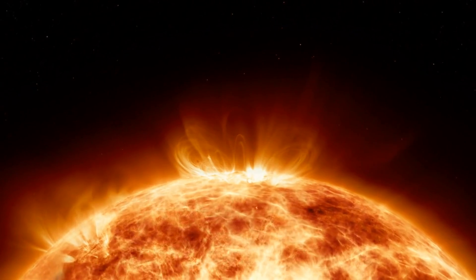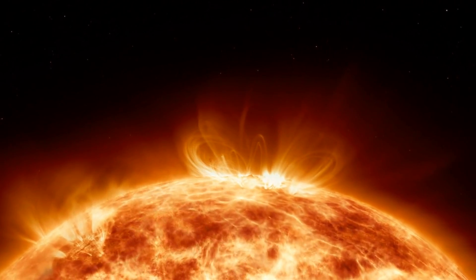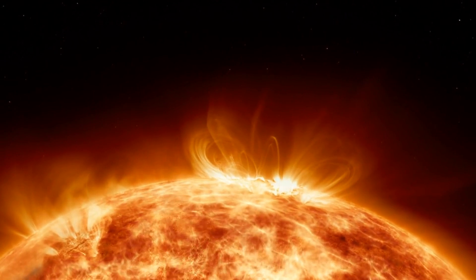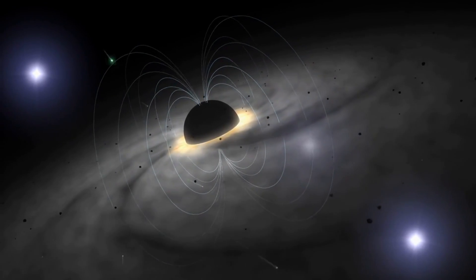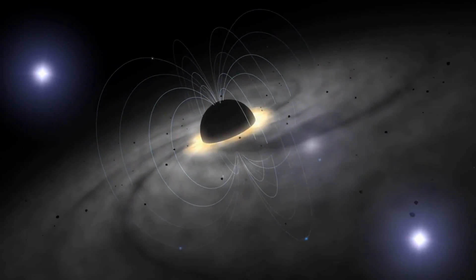Solar flares are caused by the sudden release of magnetic energy stored in the sun's atmosphere. The sun's magnetic field is constantly changing and can become twisted and distorted over time.